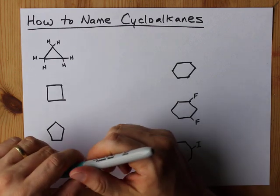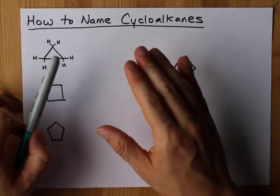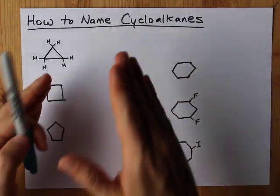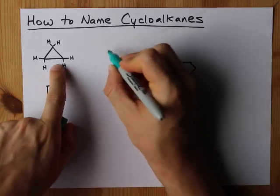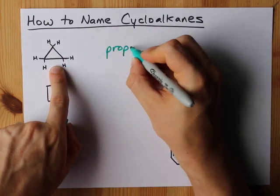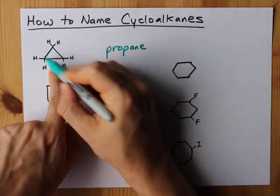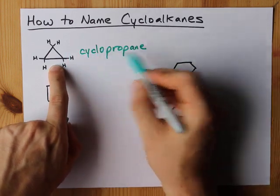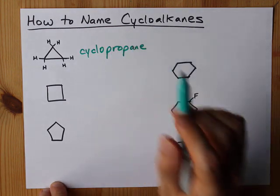Three carbons in a ring makes 'prop.' Prop meaning three carbons, and because they're in a ring you have to preface prop with cyclo. Three carbons gives you the prop, they're all single bonded together so it's propane, and because they're all in a ring we preface it with cyclo. This is cyclopropane — a ring of three carbons, single bonded.